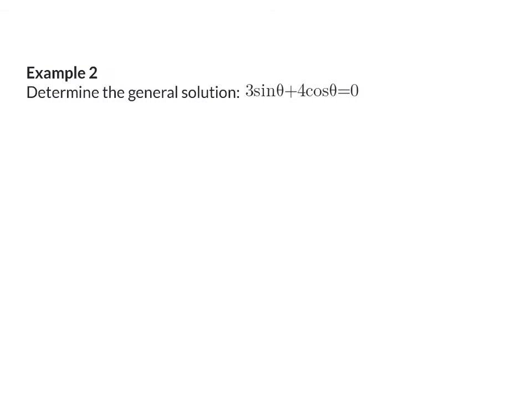Example 2. Determine the general solution of 3 sin theta plus 4 cos theta equal to 0. So here, once again, we have two terms with two trig functions, but it cannot be factorized, so we are going to use type 2.